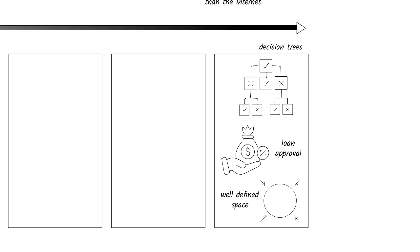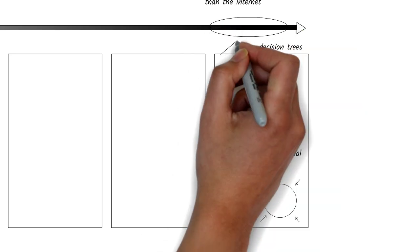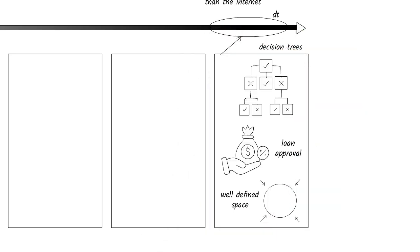However, they are limited to deterministic outcomes and they cannot handle the complexity and uncertainty that AI aims to address. Here's where decision trees are on the maturity spectrum. They're pretty mature.